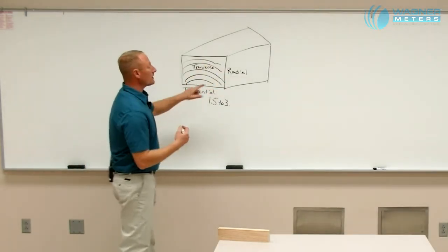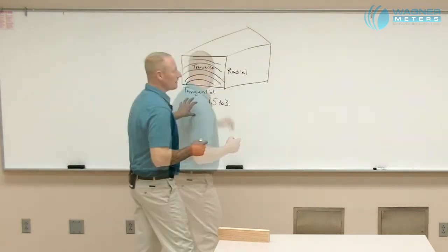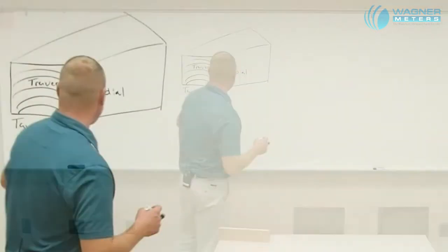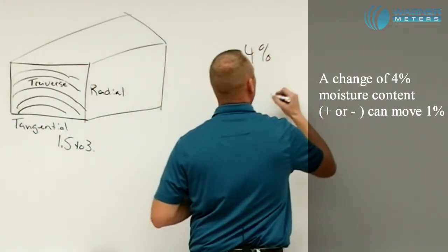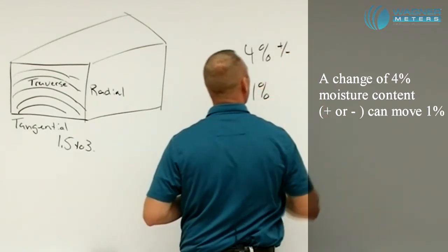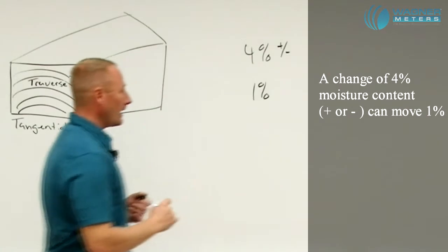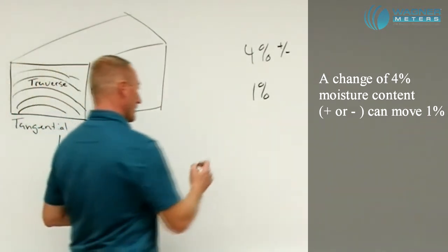Regardless, both of these are going to move. Now this tangentially is going to move significantly more than radially. How much can tangentially, or that tangential face actually move? Well, a change of 4% moisture content, whether it be plus or minus, can move 1%. 1% doesn't seem like that much in a change. But let's put it into a little different terms.